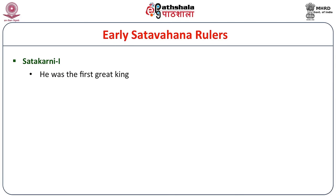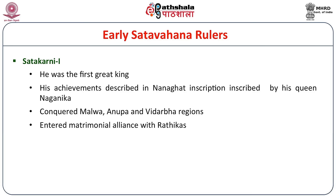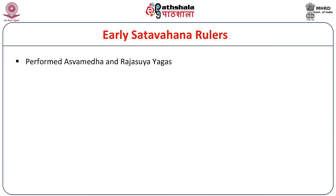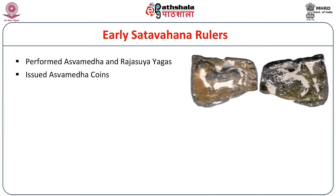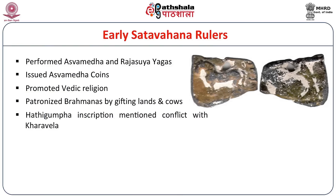Satakarni the First was the first great king of Shatavahana history. His achievements are described in the Nanaghat inscription inscribed by his queen Naganika. He conquered Malwa, Anupa, and Vidarbha regions, entered matrimonial alliances with the Rashtrikas, and exercised sway over the Aparanta, Konkan, and Kathiawar regions. He assumed the title Dakshinapathapati, performed Ashvamedha and Rajasuya Yagas, issued coins, and promoted Vedic religion by giving lands and gifts to Brahmanas. The Shatavahanas were the first in Indian history to issue land grants to Brahmins and religious institutions.